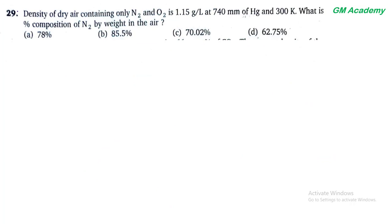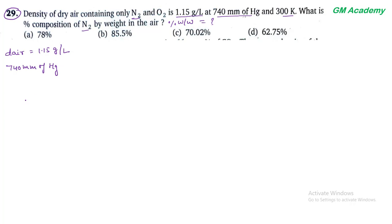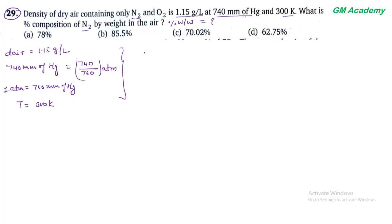Next question 29. Density of dry air containing only nitrogen and oxygen is 1.15 gram per liter at 740 mm Hg and 300 K. Percentage composition of N₂ by weight in air determine करना है। Density = 1.15 g/L, pressure = 740/760 atm, temperature = 300 K। PV = nRT से density का expression: D = PM/RT।